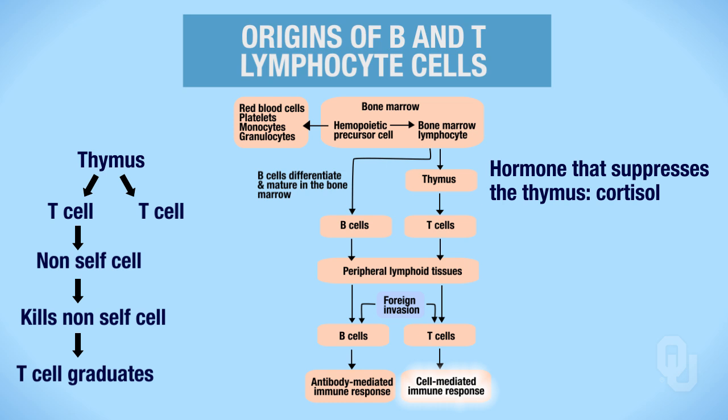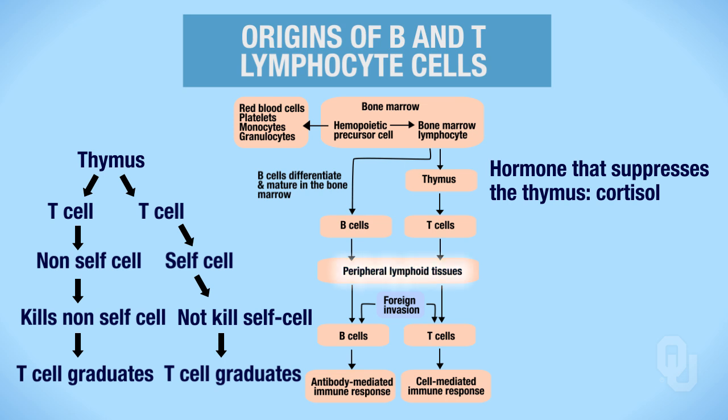We'll talk more about the cell-mediated immune response and the antibody-mediated responses later. Now back to the thymus: the T cell can also be presented with a self-cell—a cell that is normally found within the body. Should the T cell kill it? The answer is no. You do not want a T cell killing self-cells, because then you would have an autoimmune disease. When the T cell is presented with a self-cell and does not kill it, it gets to graduate and move on to the peripheral lymphoid tissues.